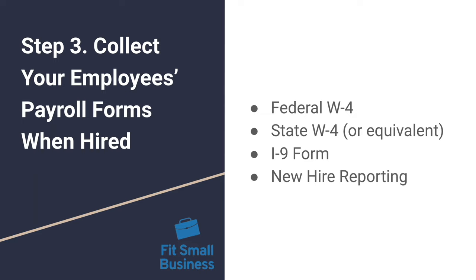Step three: collecting your employee's payroll forms. You'll definitely want to collect a federal W-4, which is the federal tax withholding document that tells you what tax rate to use for the employee. Same on the state level — whether it's a state W-4 or the equivalent form — if your employees are in states that have state withholding, you'll want to make sure you have their state withholding document so you can make those withholdings accurately. The I-9, or work eligibility form, has a component filled out by the employee and a component filled out by the employer, so you'll want to get that upon hire in a timely manner.